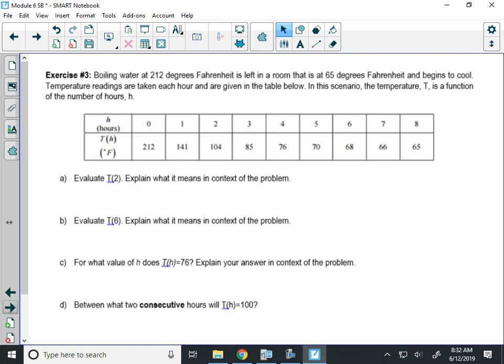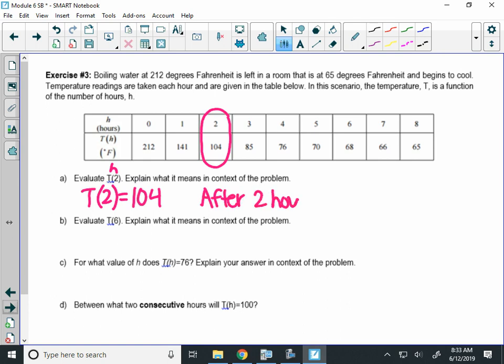Alright, let's switch to tables and graphs here. So, for example, this table represents the temperature of water. It says water at 212 degrees Fahrenheit was left in a room to cool. Each hour, they took the temperature reading, and it's recorded in a table. Evaluate T of 2. Well, the input here is 2. That's the number of hours. So, go to where hours is 2. And that gives me an output of 104. So, I'm going to write in function notation here, T of 2 equals 104. Now, what that means in context, that means translate that math sentence to an English one, is after 2 hours, the water is 104 degrees Fahrenheit.